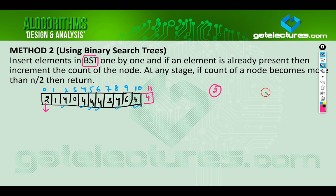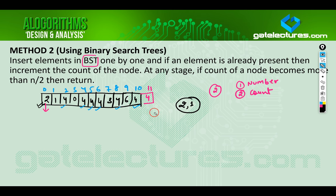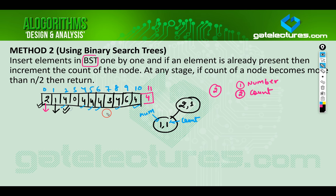We take one element at a time and insert it into the binary search tree. With every node we maintain two values: the number being inserted, and the count — how many times that element appears in the array. The first element is 2, so we add node (2, 1). The second element is 1, which goes to the left, giving node (1, 1). The third element is 4, which goes to the right, giving node (4, 1).